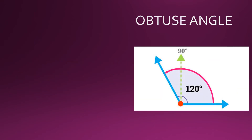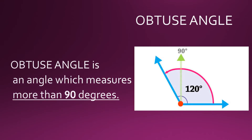What is an obtuse angle? An obtuse angle is an angle which measures more than 90 degrees. In this figure alongside, you can see the angle is measuring 120 degrees, which is more than 90 degrees, so this angle is an obtuse angle.